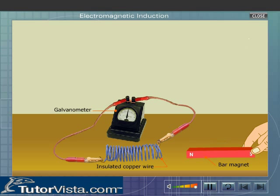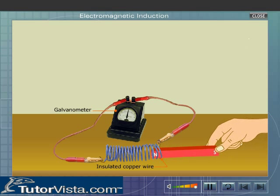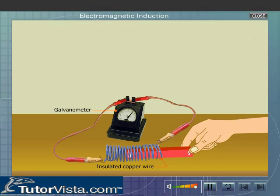Now move a bar magnet through the coil. What do you observe? The galvanometer shows a deflection. This proves that current is flowing through the coil.